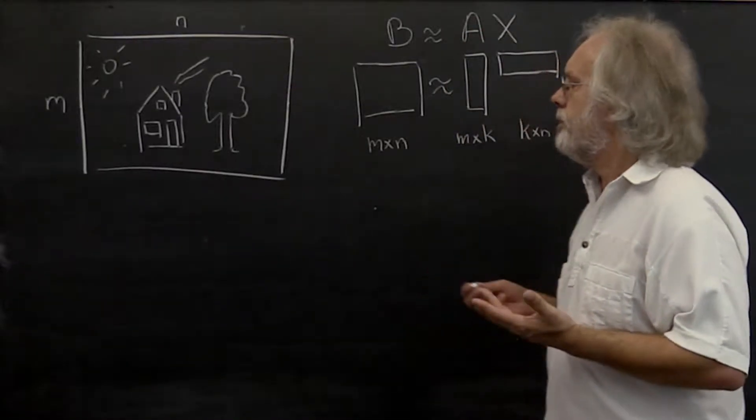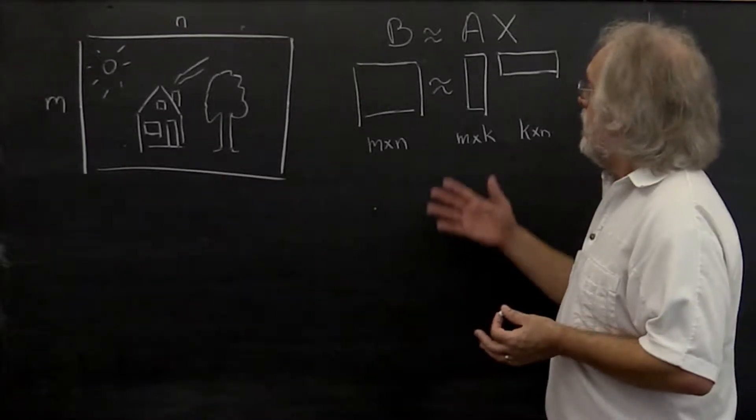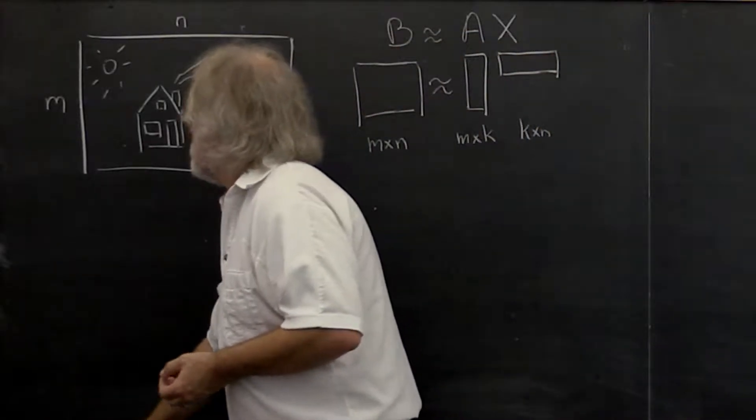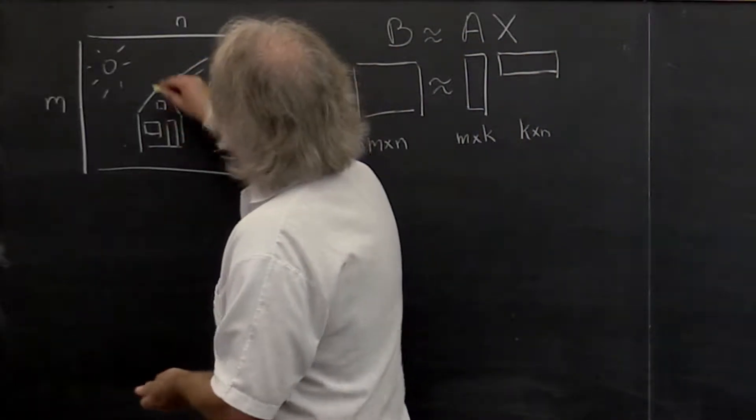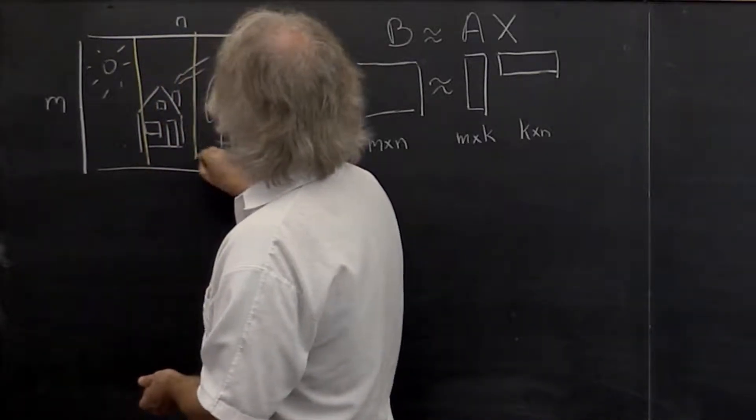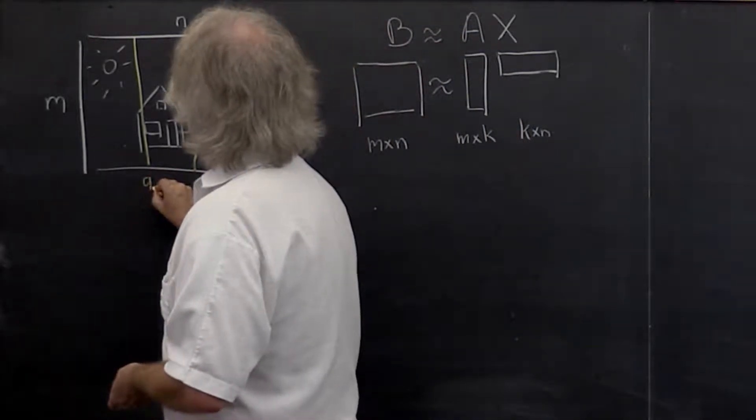How might we do this? One way for coming up with matrix A could be to say, we'll pick a couple of columns in our picture and we'll make those the columns in our matrix A.